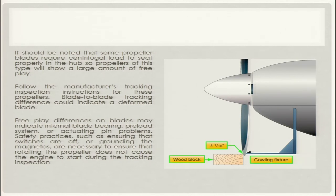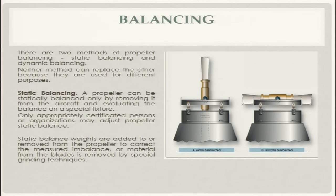Safety practices such as ensuring switches are off and grounding the magnetos are necessary during tracking inspection to ensure the propeller does not cause the engine to start. There are two methods of propeller balancing: static balancing and dynamic balancing. Neither method can replace the other as they are used for different purposes. Static balancing requires removing the propeller from the aircraft and evaluating balance on a special stand.